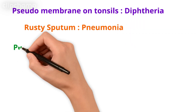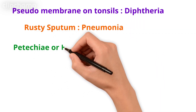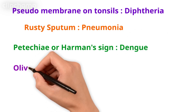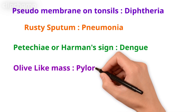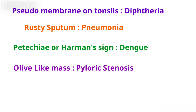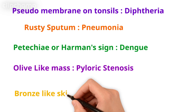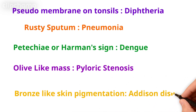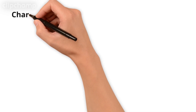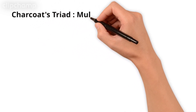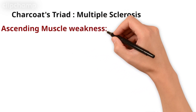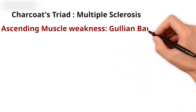Rusty sputum is the symptom of pneumonia. Petechiae or Hermann's sign is the sign of dengue. Olive-like mass you will see in pyloric stenosis. Bronze-like skin pigmentation is the sign of Addison's disease.